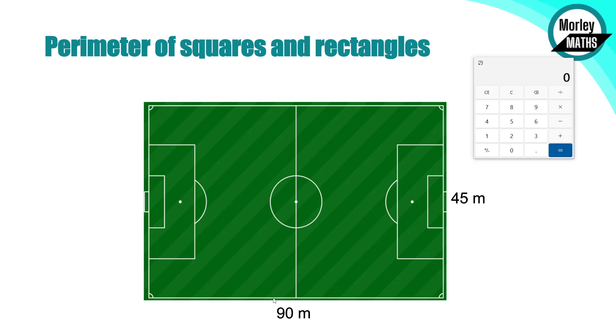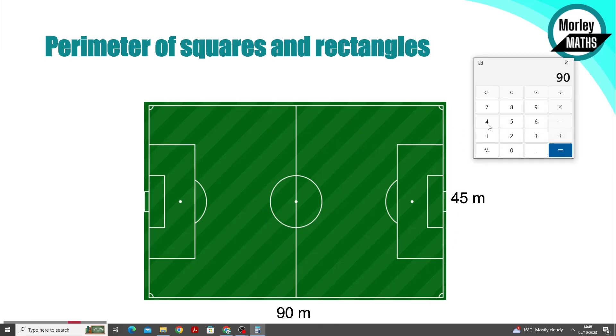Here we've got 90 plus 45, plus another 90 plus another 45. The perimeter of this football pitch is 270 meters. It is in meters because it's just distance, not like area where it's meters squared or volume where it's meters cubed. This is just a distance, so it's left in meters.